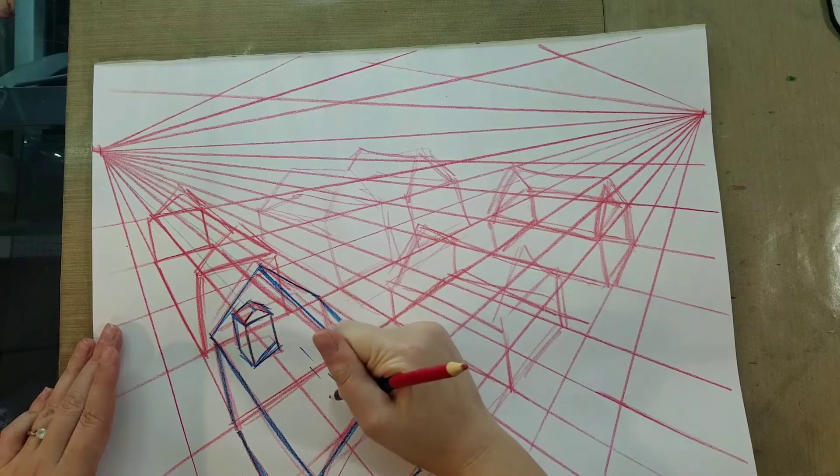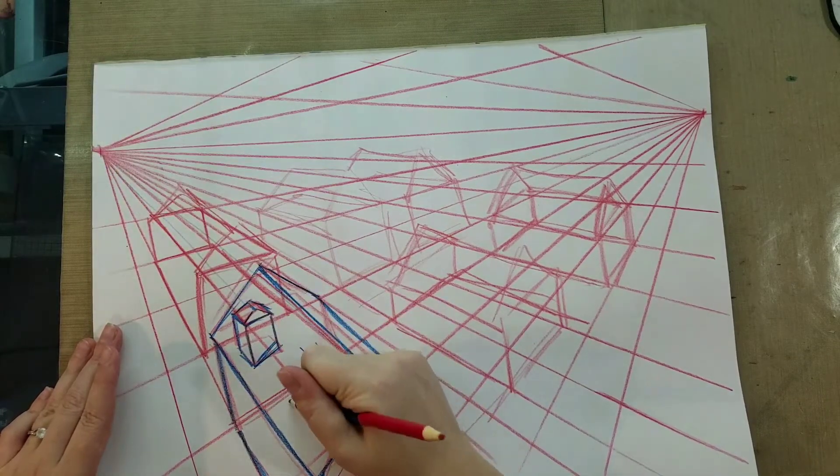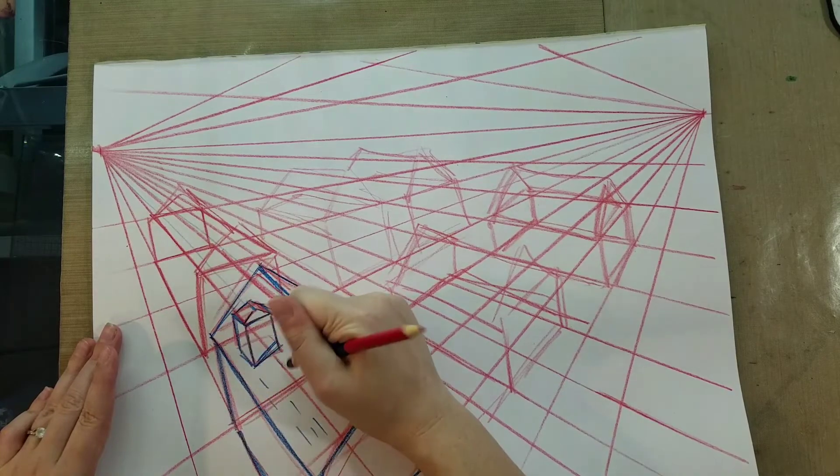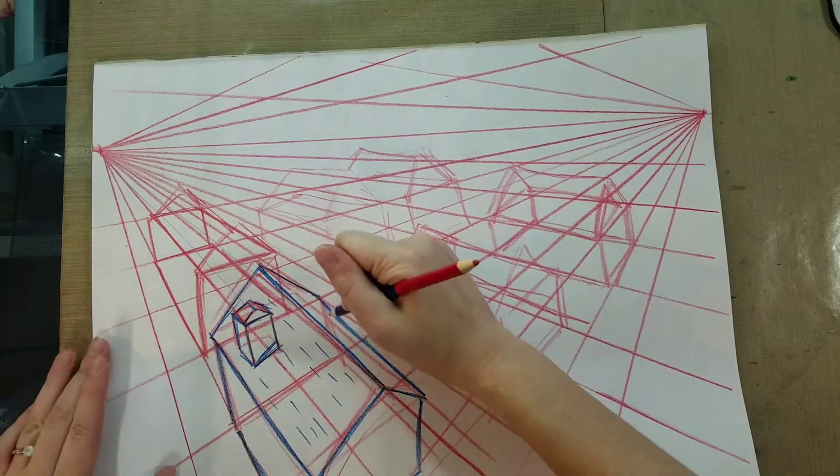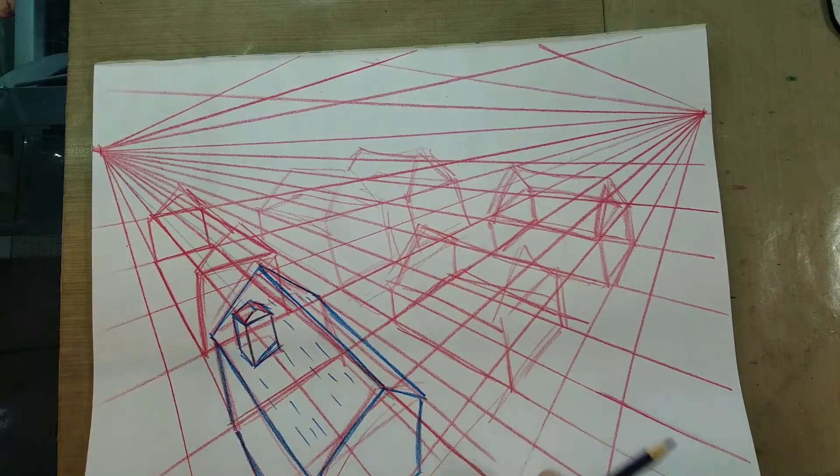Even the shingles are going to head off towards a vanishing point. And that's what makes having a perspective grid really handy is you can just kind of quickly jot them in.